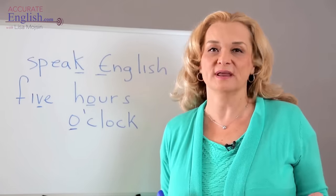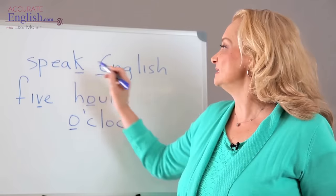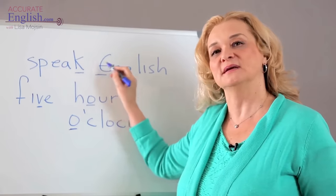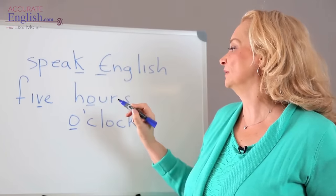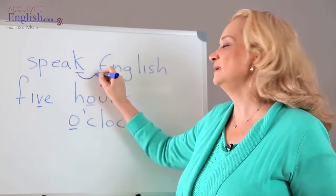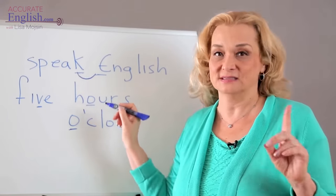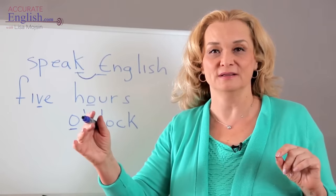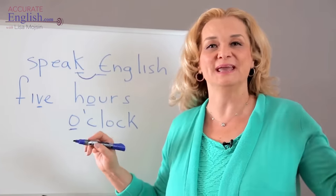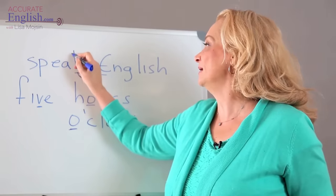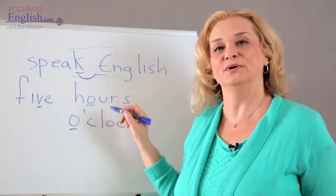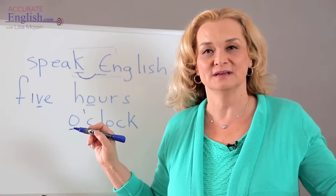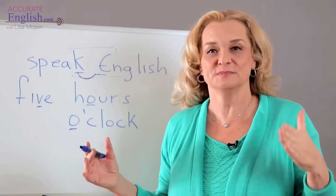Let's talk about what we do when we connect words together. Look at this example: 'Speak English.' We have a consonant at the end and a vowel at the beginning of the next word. We connect the final consonant to the next vowel — that's a very important rule. So we don't say 'I speak English' separately; we say 'I speak English.' This K becomes part of the next word. 'Do you speak English?' That sounds much better than separating the words.